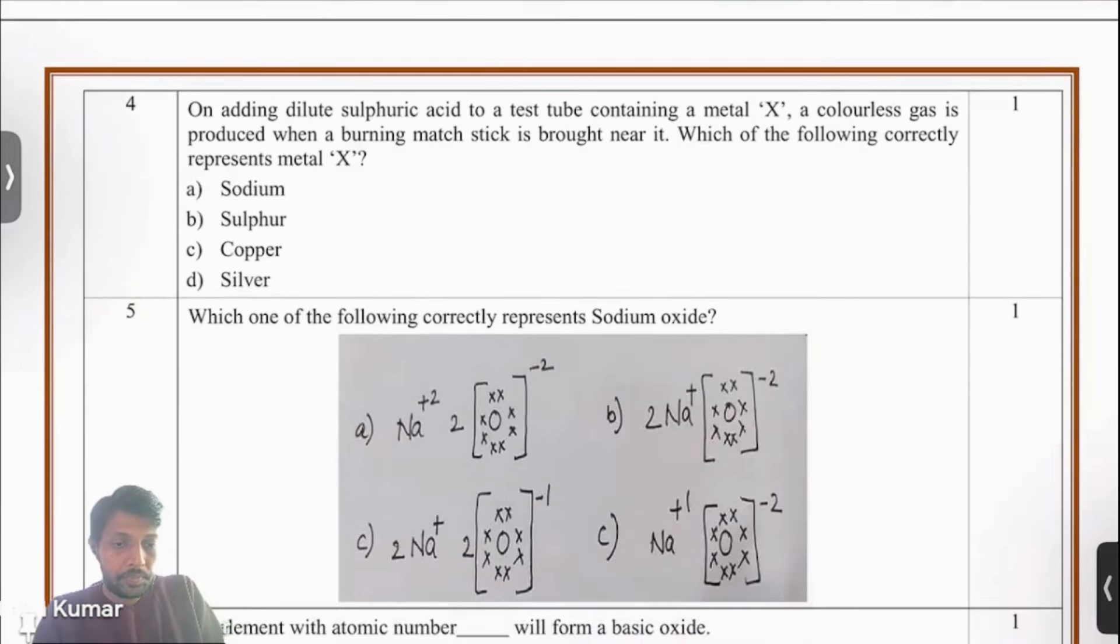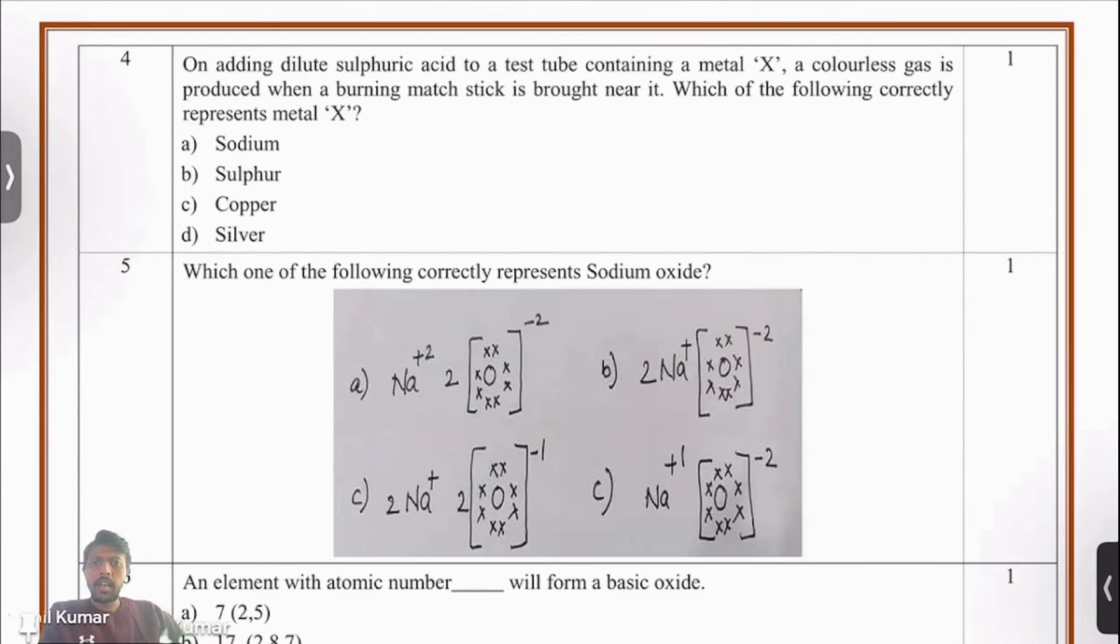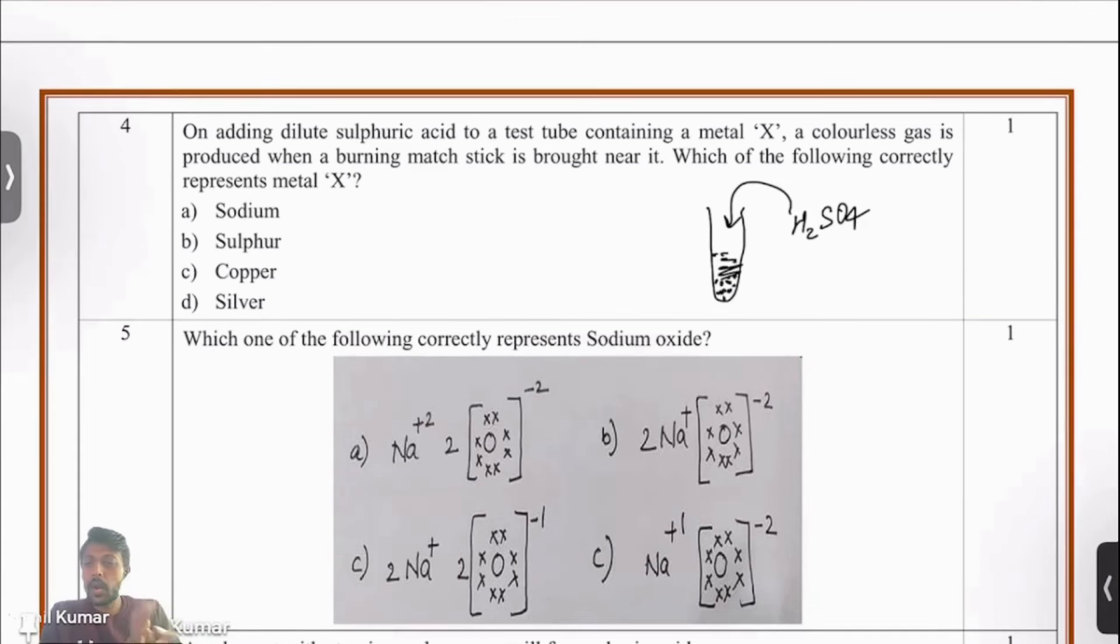Question number 4. On adding dilute sulfuric acid to a test tube containing a metal, a colorless gas is released, and it's also given that this colorless gas burns when a burning matchstick is brought near the mouth of the test tube. Here's our test tube with some granules of the metal. We're pouring H2SO4 and it releases a gas. The exercise is to identify that gas.